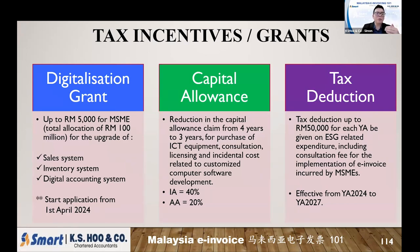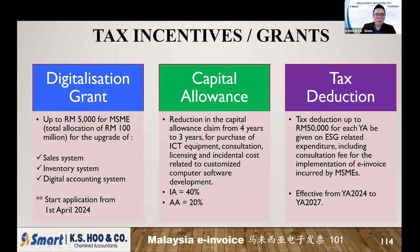The digital grant application just started from 1st April 2024, just a couple of days ago. If you want to know more, check with your software supplier — they will normally apply on your behalf. The second incentive is capital allowances, which applies when your company buys software or a computer.